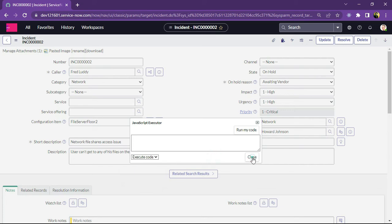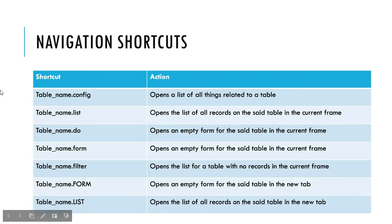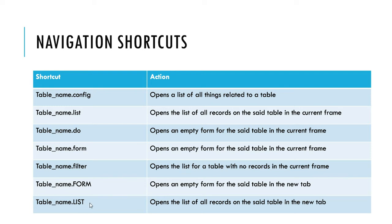That's all about keyboard shortcuts. Let's move on to navigation shortcuts, which are used very frequently by developers. These include: table_name.config, which opens a list of configuration items related to a table; table_name.list, which opens the list of all records in the current frame; table.do, which opens an empty form in the current frame; table.form, which opens an empty form; table_now.filter, which opens the list for a table with no records; and table_name.list with caps, which opens the list in a new tab.